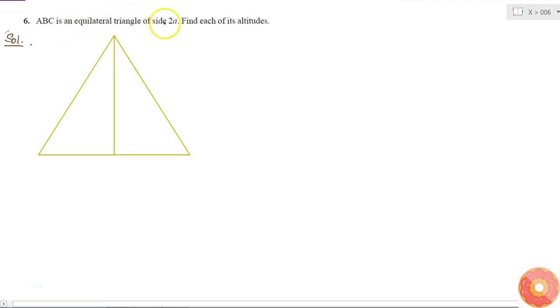ABC is an equilateral triangle of side 2A. So this is my triangle ABC. Then I have AB is equal to BC is equal to CA is equal to 2A.